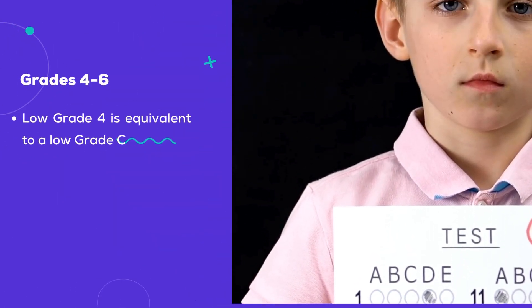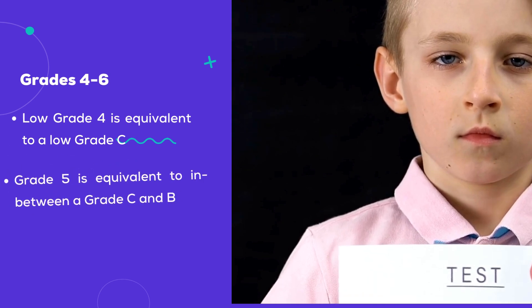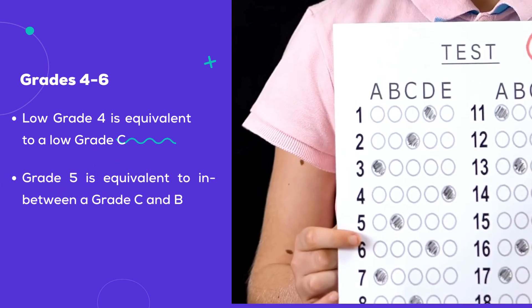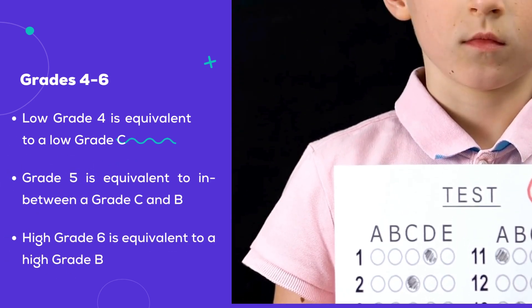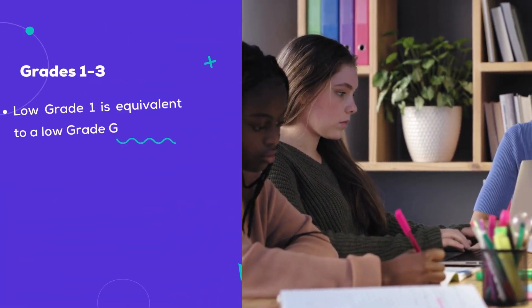Grades 4 to 6: Low grade 4 is equivalent to a low grade C. Grade 5 is equivalent to between a grade C and B. High grade 6 is equivalent to a high grade B.